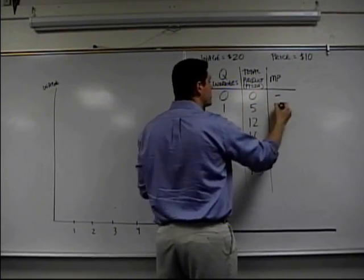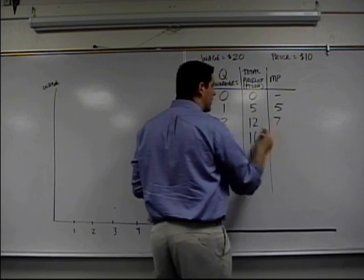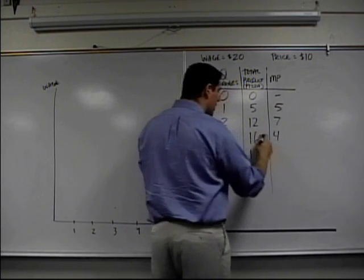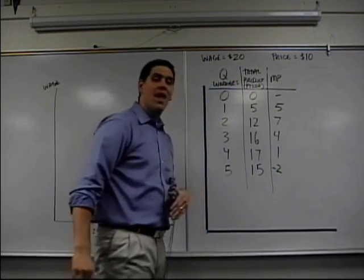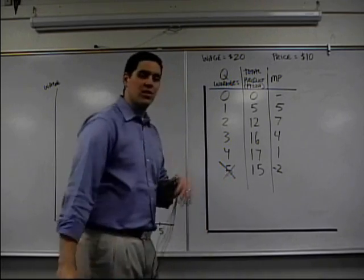So this first cook had an additional five. The next cook, additional seven. Five to twelve is seven. Next cook, additional four. Next one, additional one. This next one actually had total product fall, and I'm never going to hire that worker. I'm not even going to analyze the fifth worker.